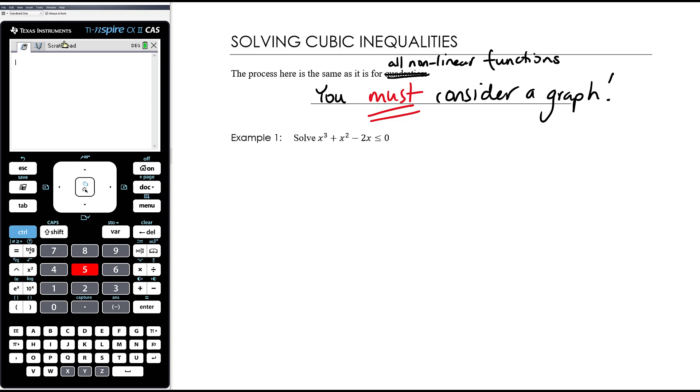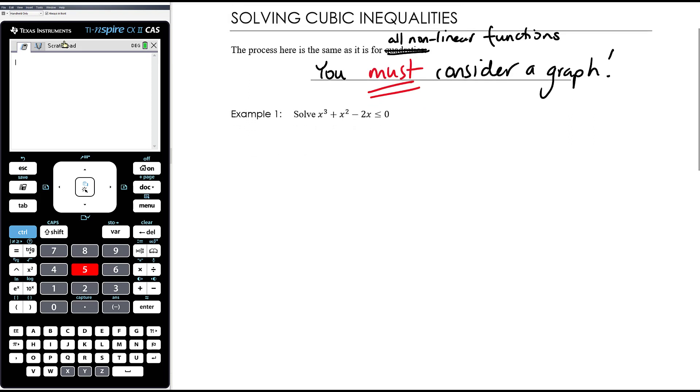So we want to solve, as an example here, we're just going to do one. It's very simple. It just requires you to know how to sketch a cubic graph. We want to solve x cubed plus x squared minus 2x less than or equal to 0.